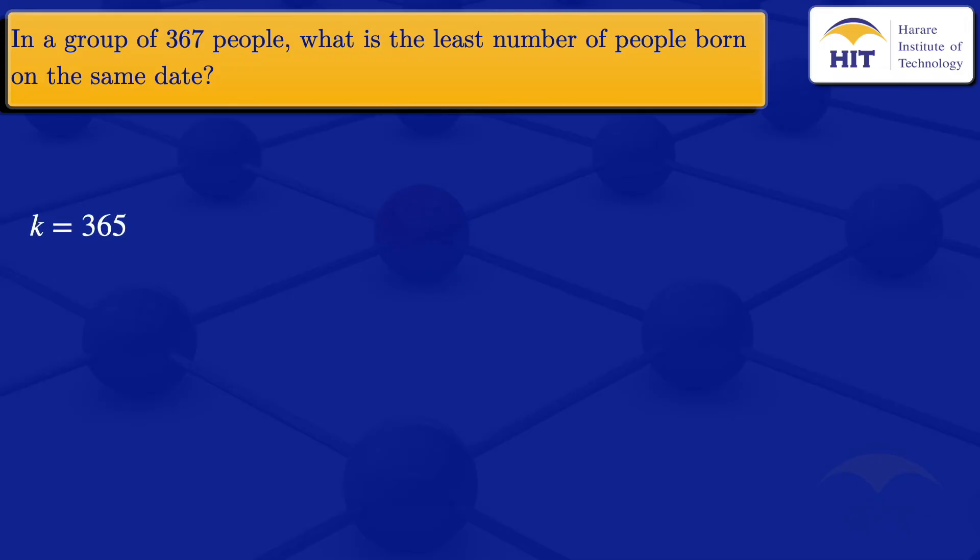But in this case now, we are also given an n, 367 people, so we have n equals 367.